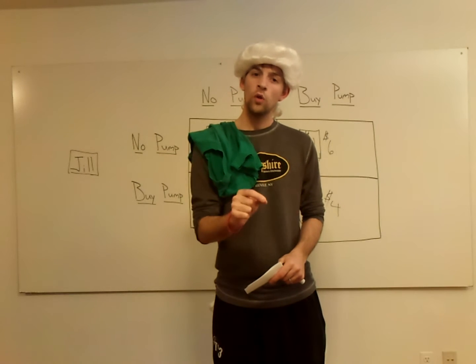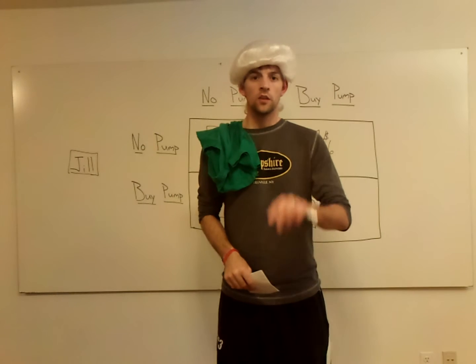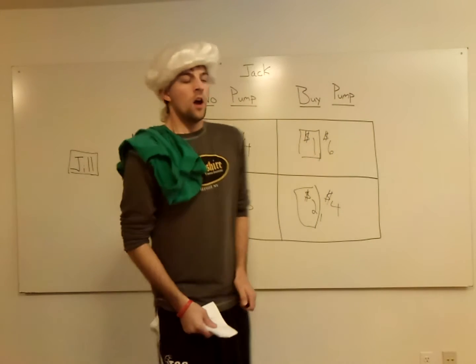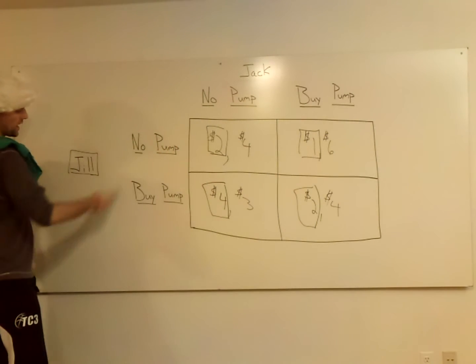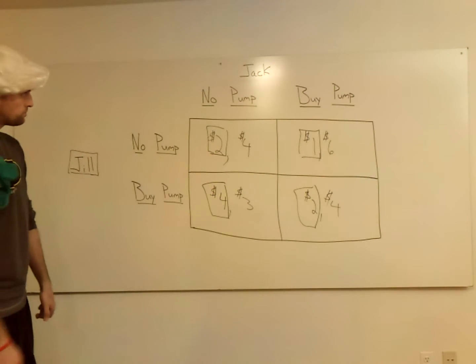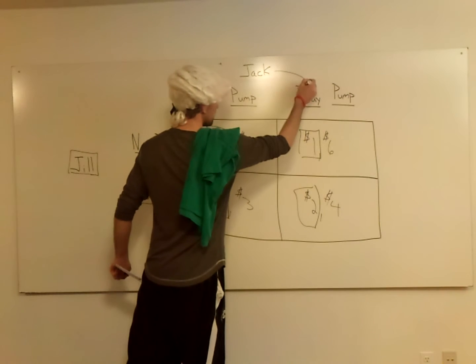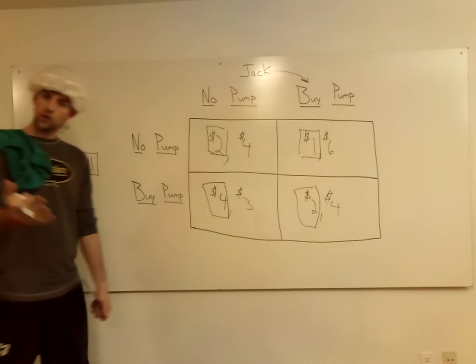So you notice in oligopolies, you don't think just about yourself. You think about what the other guy is going to do. So we're going to practice that here in a second. So we've got Jack and Jill here. They've got two choices, no pump or buy the pump. I'm going to ask you a simple question. If Jack chooses to buy the pump, what should Jill do?